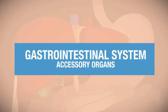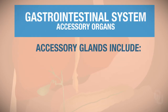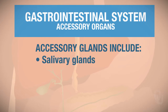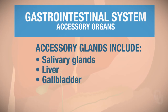This video will focus on the accessory organs. Some general things you should be familiar with: accessory glands include the salivary glands, the liver, the gallbladder, and the pancreas.